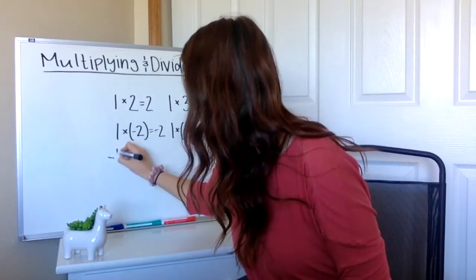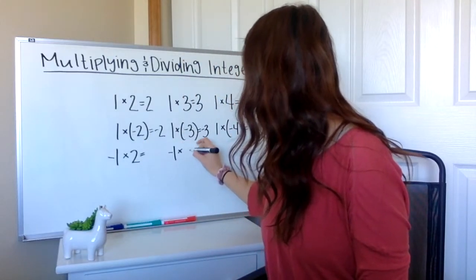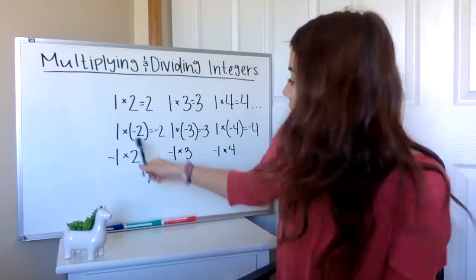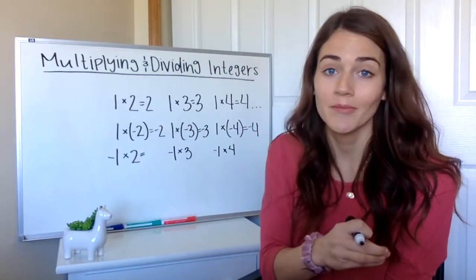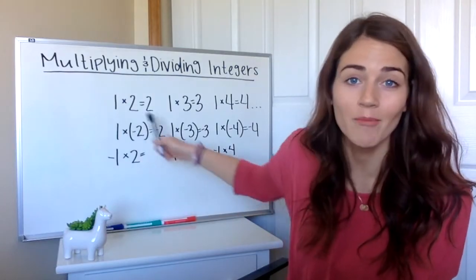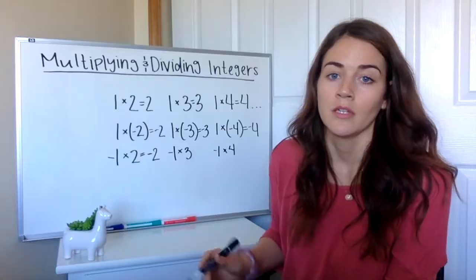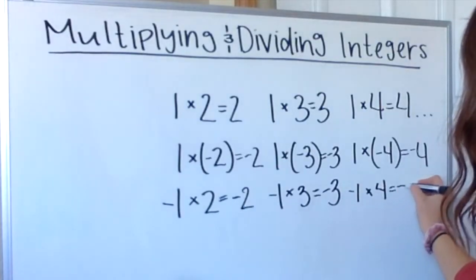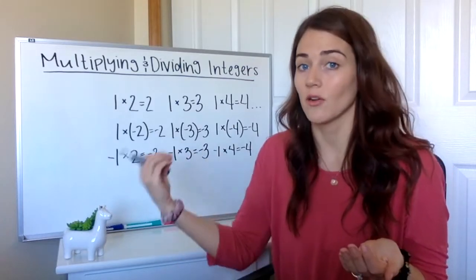What if I flipped that? What if instead I put the negative on one and left my second number as a positive? So negative one times two, negative one times three, negative one times four. If you look at these two problems, the only thing I changed is I distributed my negative sign to the other number — instead of being on the two, now it's on the one. So it's the same thing; all we did was move that negative sign. Negative one times three is negative three, negative one times four is negative four. Two positives give us a positive, and a positive and a negative will always give us a negative.